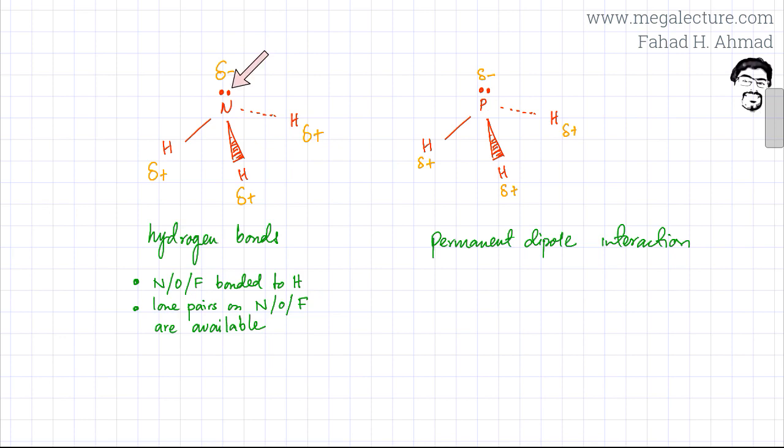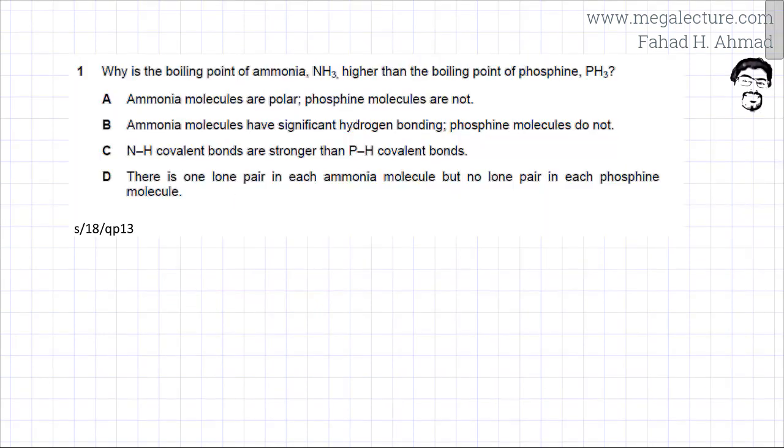In this case, the lone pairs on nitrogen are available, increasing the negative charge density or partial negative charge on the nitrogen atom. The force of attraction between two ammonia molecules is the result of hydrogen bonds.